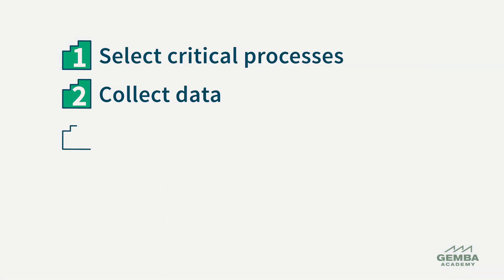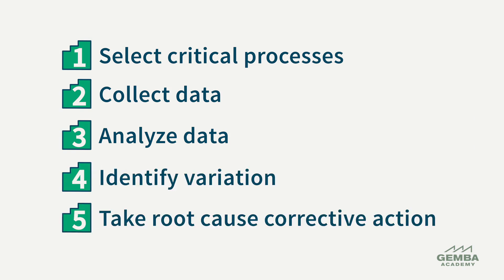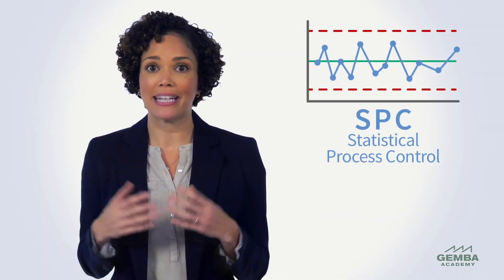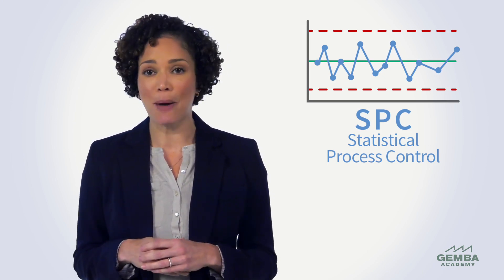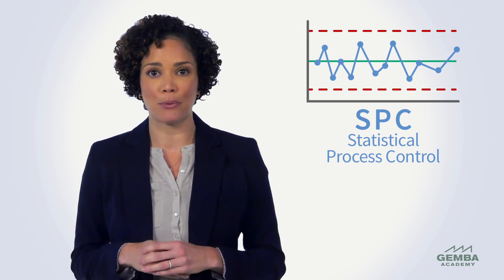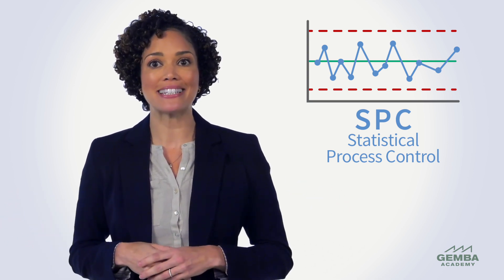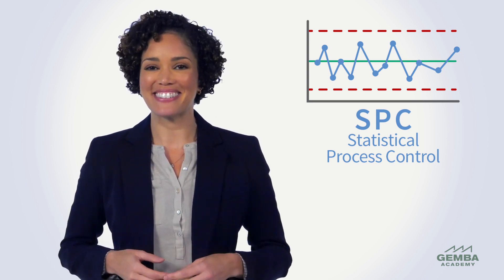We put statistical process control into practice through a five-step approach: selecting critical processes, collecting data, analyzing data, identifying variation, and taking root cause corrective actions. These steps are integral to continuous improvement, making SPC essential for organizations aiming to sustain and optimize their operations. That wraps up our review of SPC, or statistical process control. We'll see you soon.